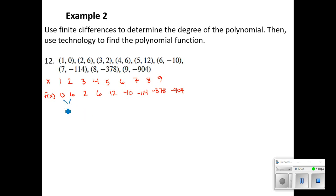Let's check first difference. 0 minus 6. 6 minus 2 is positive 4. 2 minus 6, there's our -4. 6 minus 12. 12 minus -10. -10 minus -114. -114 minus -378. And -378 minus -904. 526.